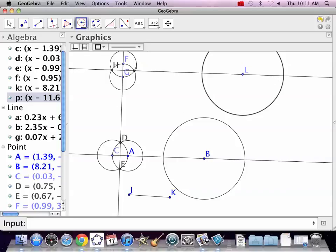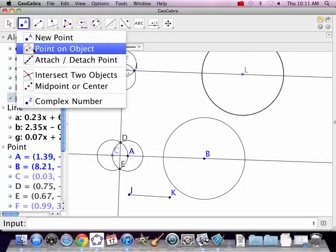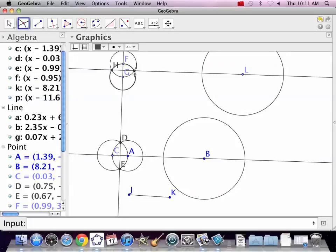Now I need to know where the endpoints are. So intersect two objects. Boom, boom. And boom, boom.